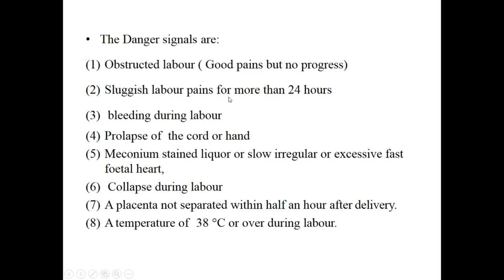Other danger signals include: bleeding during labor; prolapse of the cord or hand; meconium-stained liquor, or slow, irregular, excessive, or fast fetal heart rate — meconium-stained liquor is particularly concerning as it indicates fetal distress, leaving very little time to act; collapse during labor; placenta not separated within half an hour after delivery (prolonged third stage); and hyperpyrexia, meaning temperature over 38 degrees Celsius during labor.